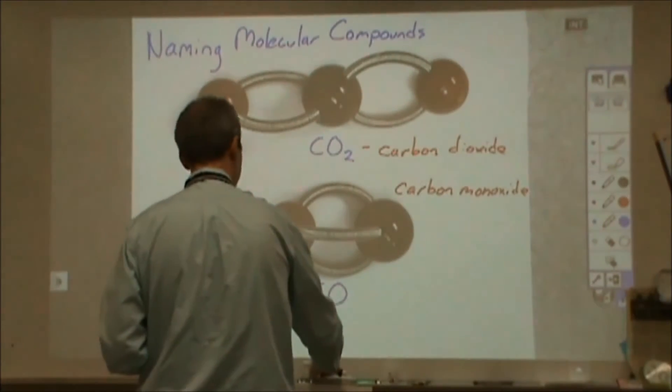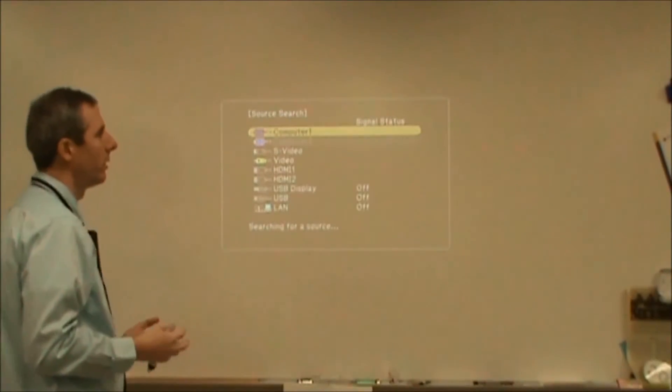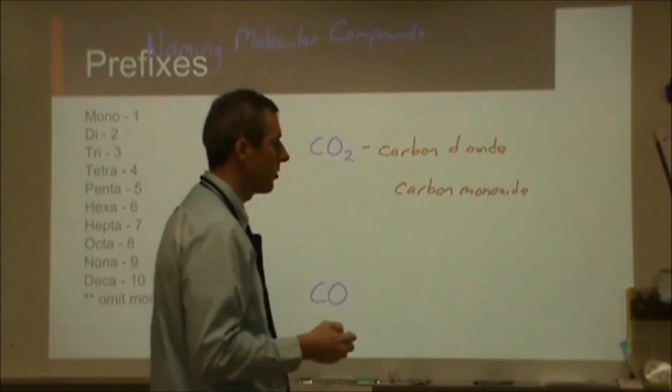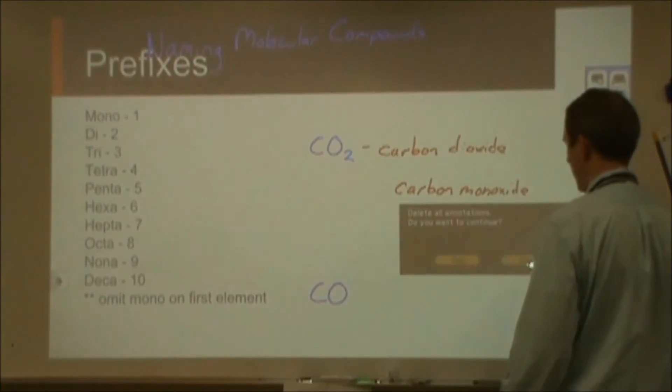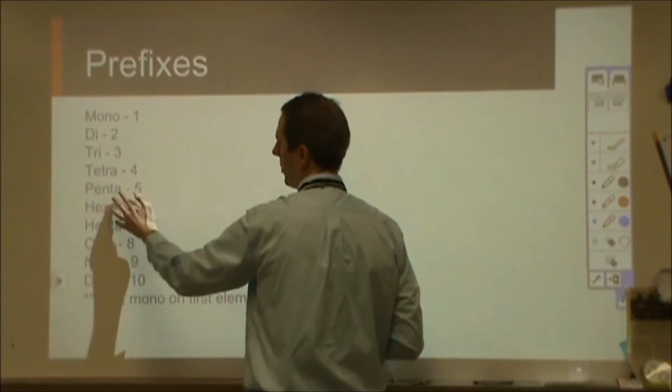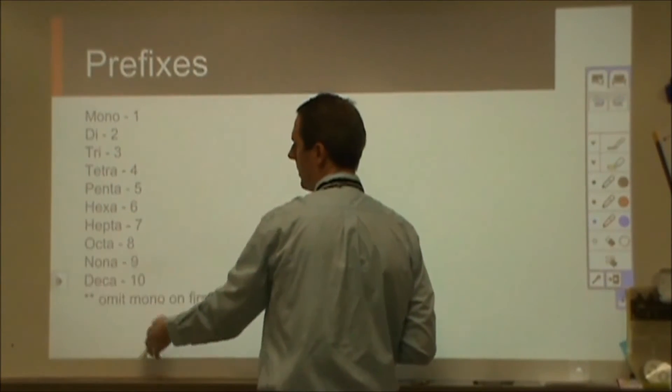So for the prefixes, we just literally have a list of all the prefixes. We would of course only look here for one through ten, because you're not going to run into things probably much beyond six at all. And so mono is one, di is two, tri, tetra, penta, hexa, hepta, octa, nona, deca.